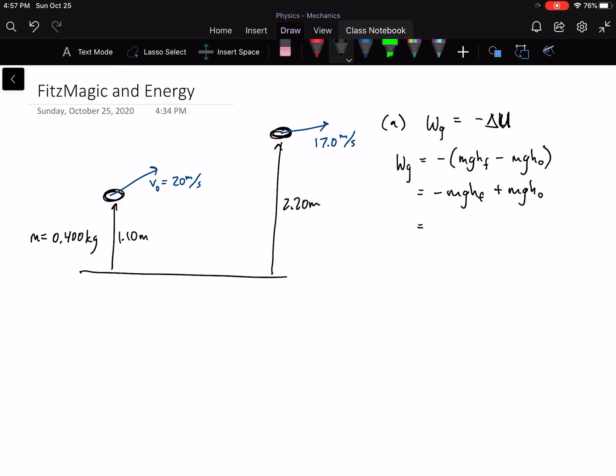And then if we like, we can just substitute in or group things a little bit. I'll group things a little bit. I like to group things. Factor out the mg. And then we have 0.4 times 9.8. For this set of numbers, I think there's another set of numbers in the other problem, or other version of this problem. So initial height, 1.1 minus 2.2. And if we plug all that in correctly, we should get that gravity did negative 4.31 joules of work on the football.